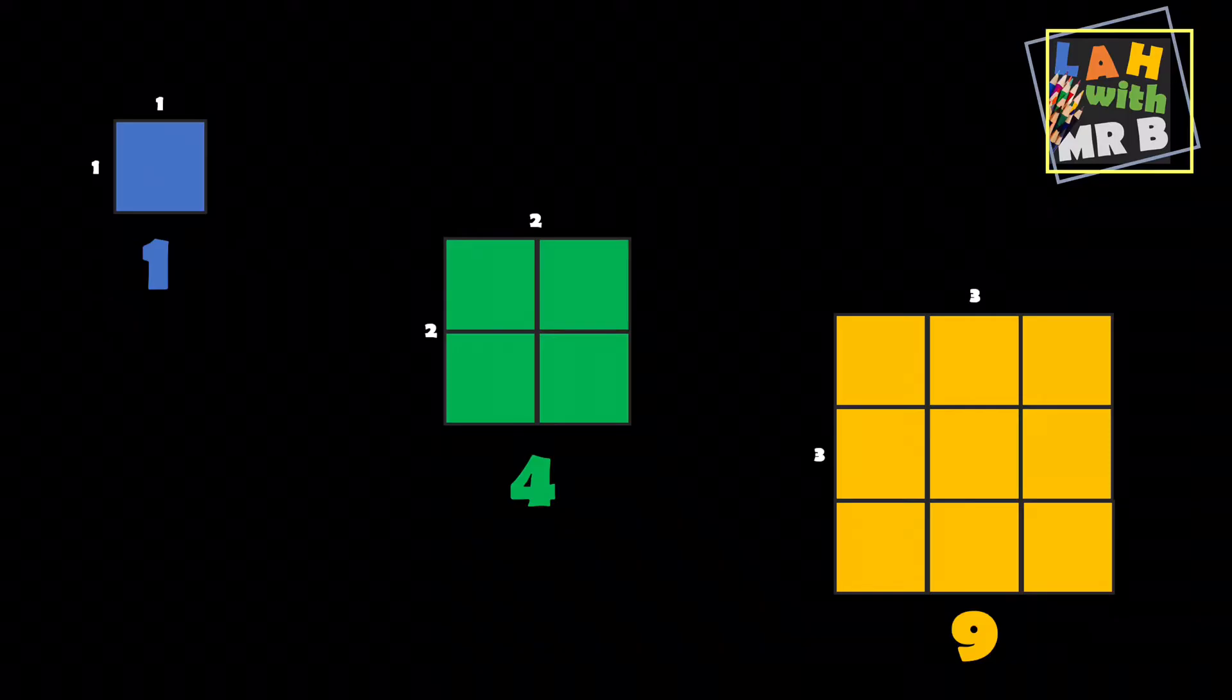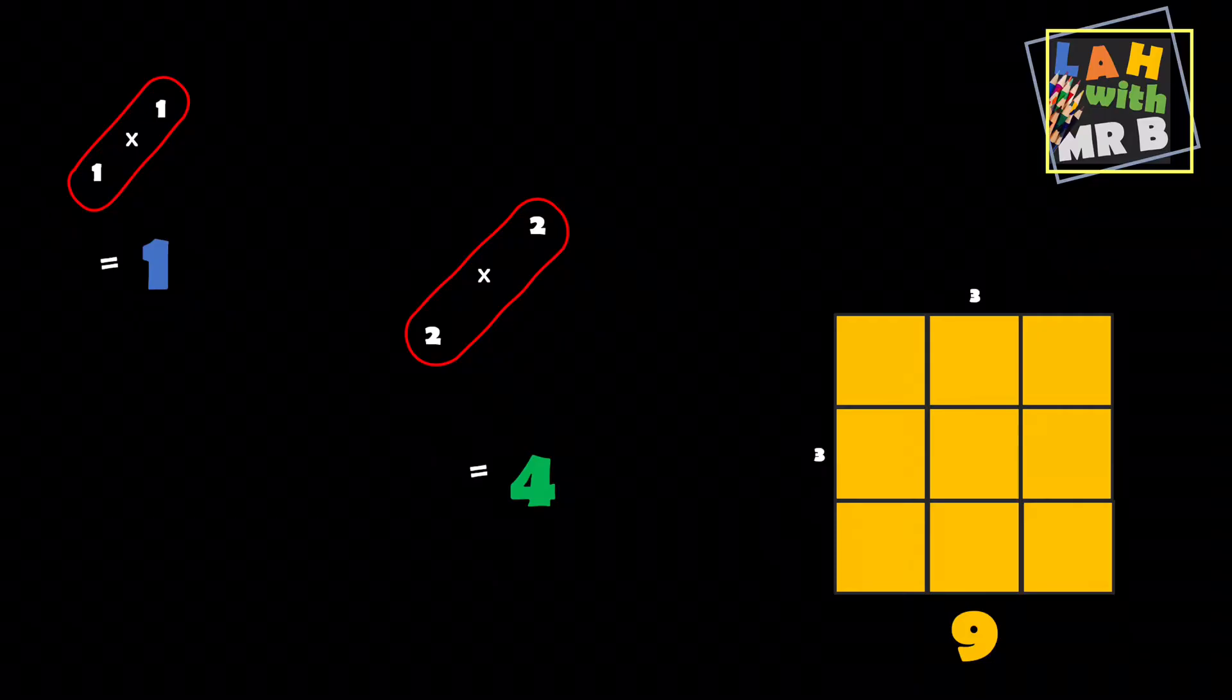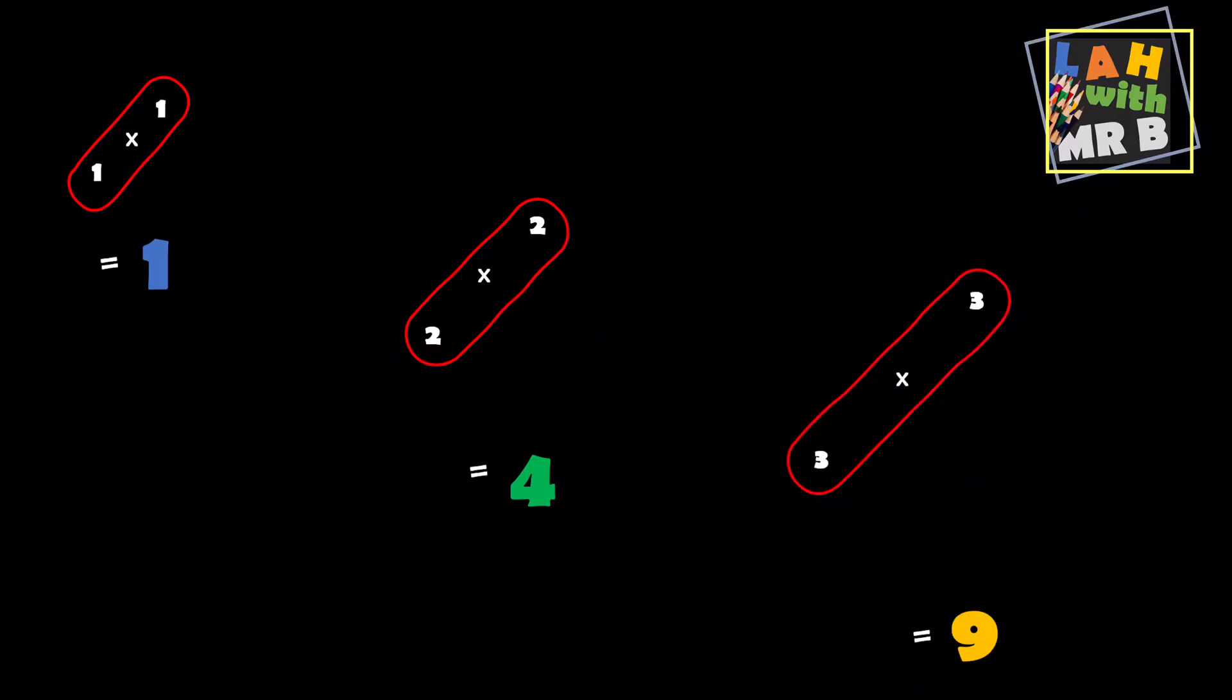Looking back at number one then we can see that one by one or one times one equals one. For four, two by two or two times two equals four. And the last one, three by three or three times three equals nine.